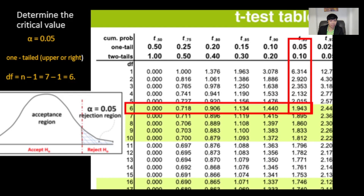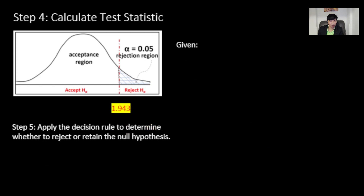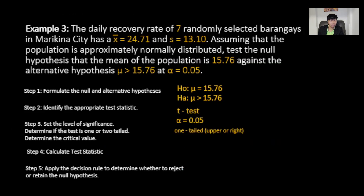Next, calculate the test statistic. Given: sample mean equals 24.71, population mean equals 15.76, standard deviation equals 13.10, and sample size equals 7. Plugging in all values gives approximately 1.82. Since 1.82 is less than the critical value of 1.943, it falls in the fail-to-reject region. Applying the decision rule: since the computed T value of 1.82 is less than 1.943, we fail to reject the null hypothesis. There is not enough evidence to support the claim that the population mean is greater than 15.76.